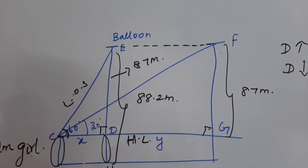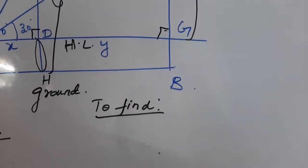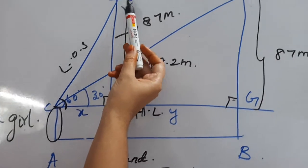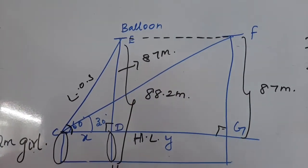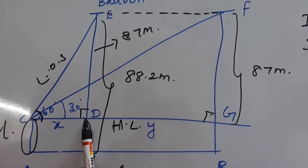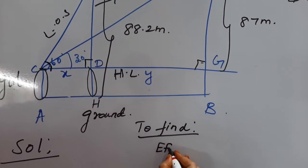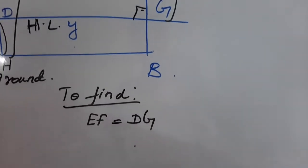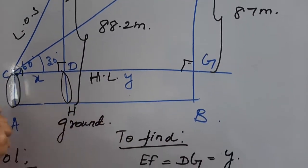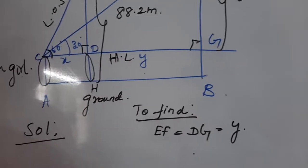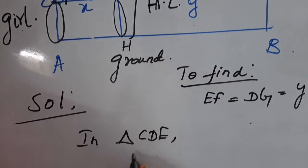We need to find the distance the balloon travelled. The initial position of the balloon is E and it moved horizontally to F. So the distance travelled is EF. The line parallel to EF is DG. We consider the distance DG as Y and the distance CD as X. So we need to find EF, which equals the parallel line DG — that is Y.